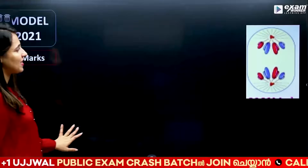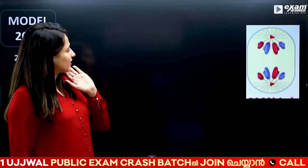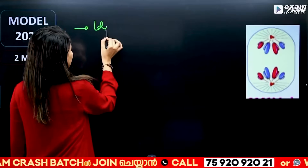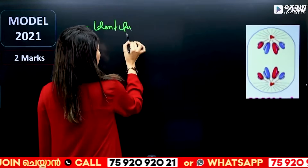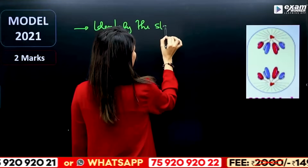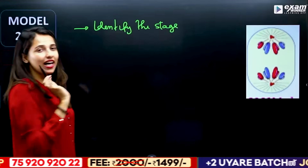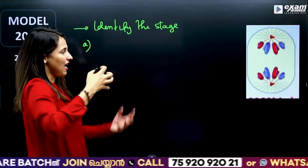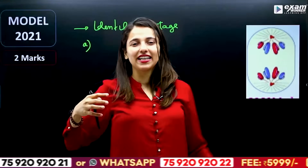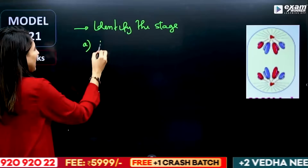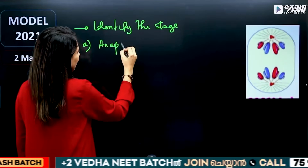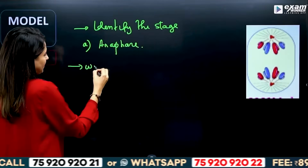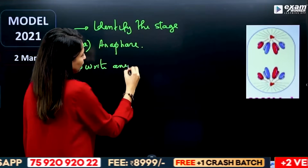This is the last question. We have to identify the stage of cell division. In this stage, we can separate sister chromatids. Write any two features of this stage.